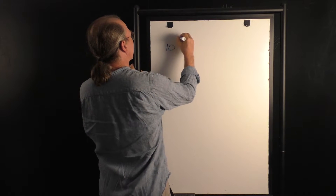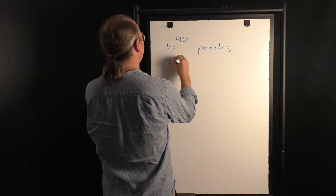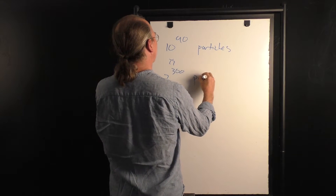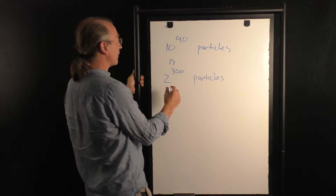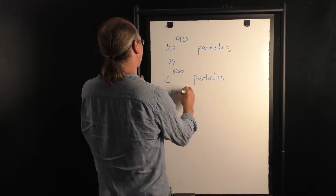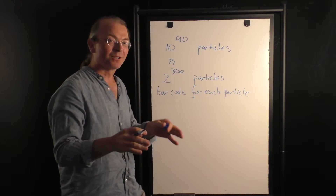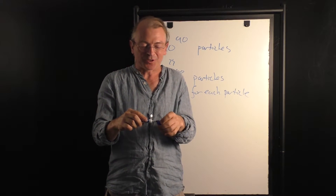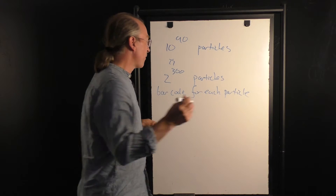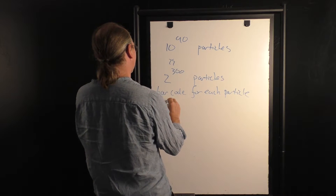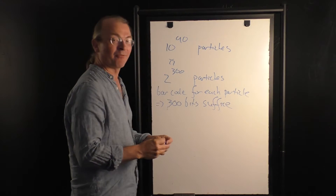If we have these 10 to the 90 particles, that's approximately equal to 2 to the 300 elementary particles in the universe — this is the total number of particles in the universe. And because there are 2 to the 300 particles, that means a barcode for each particle... if we wanted to make a barcode to label every elementary particle in the universe, 300 bits suffice to label every elementary particle in the universe.